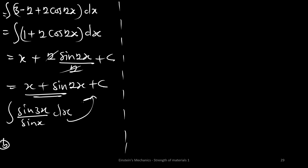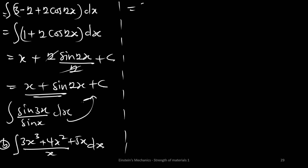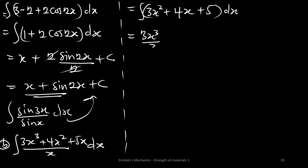For part (b), we find the integral of (3x³ + 4x² + 5x) over x dx. We divide every term by x, giving us the integral of 3x² + 4x + 5 dx. Integrating term by term: 3x³/3 + 4x²/2 + 5x plus C.